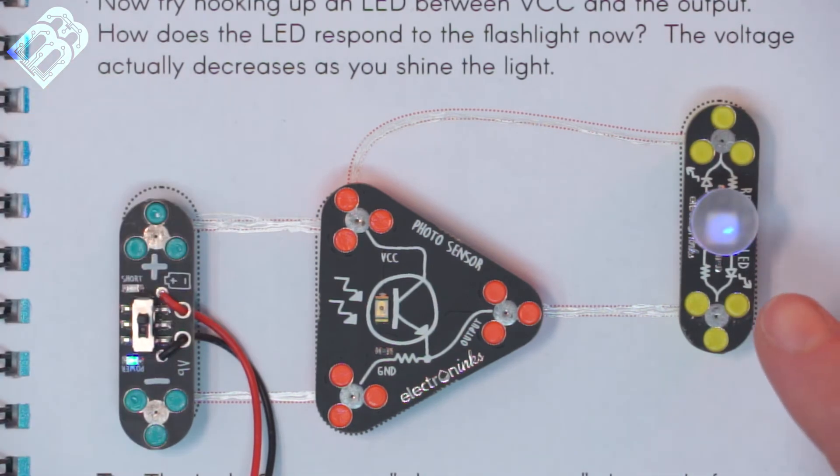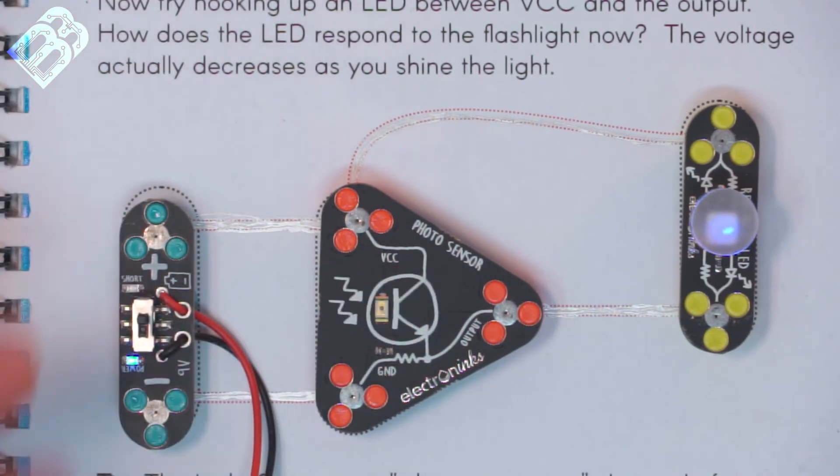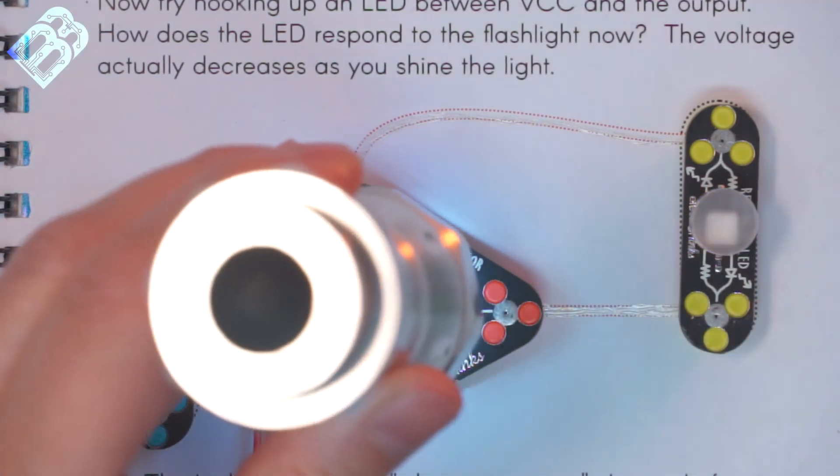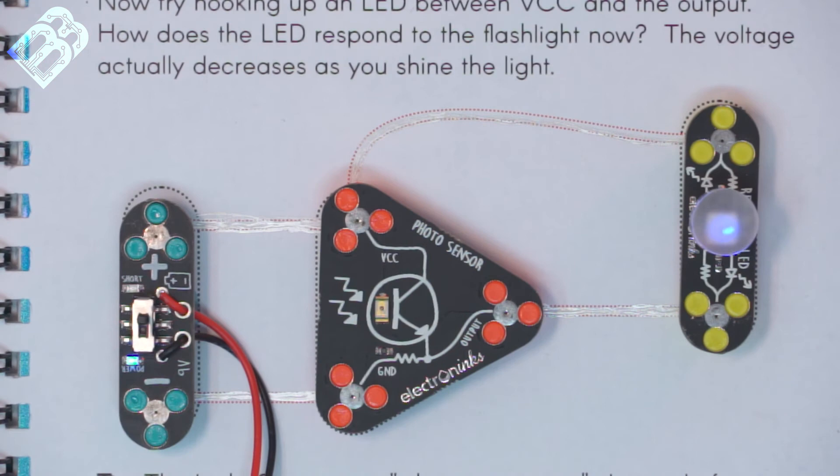So we can see that our LED is definitely on. If we cover our light sensor, the LED glows brighter. If we add light, the LED turns off. This reminds me of a nightlight.